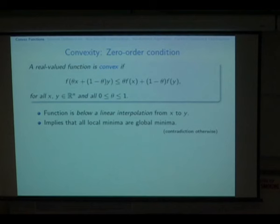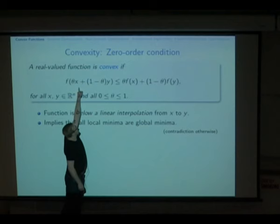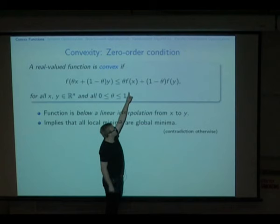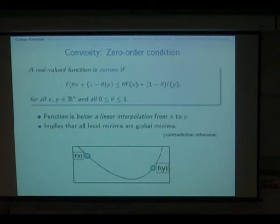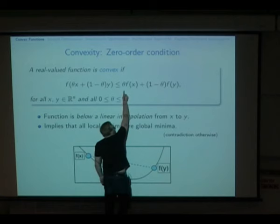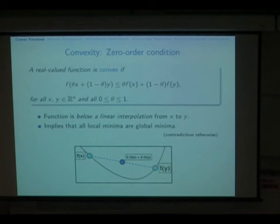We'll start from the very beginning: what actually is a convex function? The definition uses this inequality where theta is a scalar between 0 and 1, and we say that if I take the function halfway between two parameters x and y, the function is below the convex combination — a linear combination where you go between 0 and 1. As a picture: I pick any two points x and y, evaluate f(x) and f(y), draw the line between them, and a convex function says the function is always below that line.